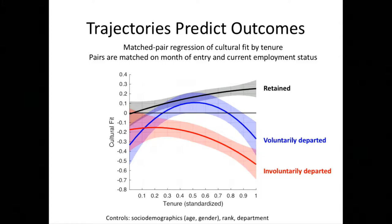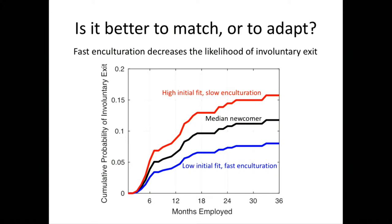Importantly, at the point of entry and immediately after, the confidence intervals overlap — so these individuals are indistinguishable immediately after they are hired into the organization. It's the journey they take in the organization and the shape of their enculturation pattern that gives us information about whether they will be retained, involuntarily departed, or voluntarily departing. So we ask ourselves: what matters more — the level of cultural fit you have immediately as you join, or your ability to adapt?